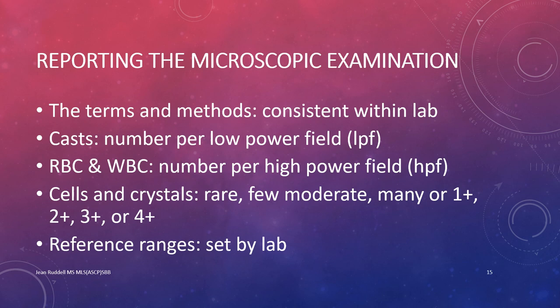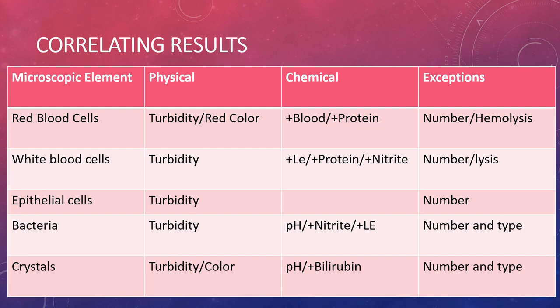When in a particular lab, follow the procedures for that lab and use consistent ways of reporting results. Casts are reported as number per low power field, while red and white blood cells are reported per high power field. Automated instruments perform calculations so units will be in numbers per milliliter. Cells and crystals may be reported in a semi-quantitative range such as rare, few, moderate, many, or 1+, 2+, 3+, or 4+. Normal reference ranges are set by each laboratory. Microscopic results should be correlated with physical and chemical findings to ensure accuracy.